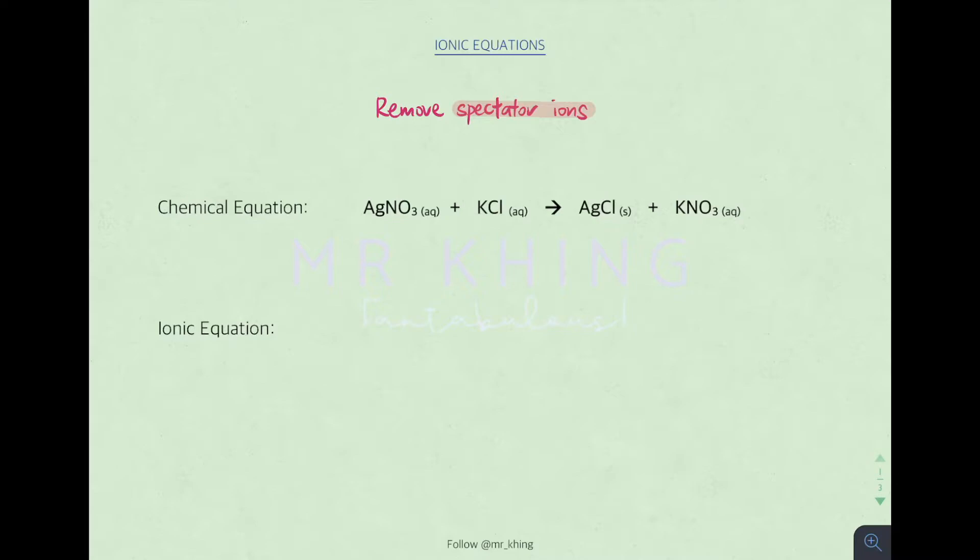Let's come into this example. Silver nitrate aqueous reacts with KCl aqueous to form AgCl solid and potassium nitrate aqueous. Remember, compare the state symbol. First one, silver initially was aqueous, after, solid. So in this case, we include silver in our ionic equation.